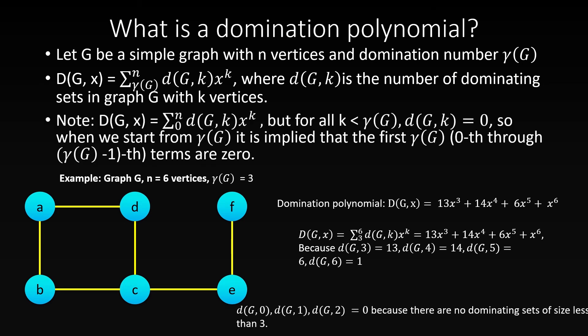Note that we could also define it as the same sum from 0 to n, but all terms where the summation index is less than gamma of G would be 0, because there are 0 dominating sets of size smaller than the domination number. So it's acceptable to define it starting from gamma of G. To find the domination polynomial of a graph, we need to first find the number of dominating sets of sizes gamma(G) through n, giving us the coefficients.